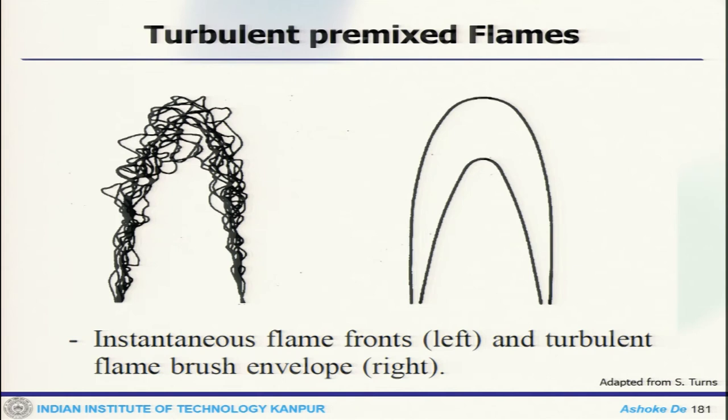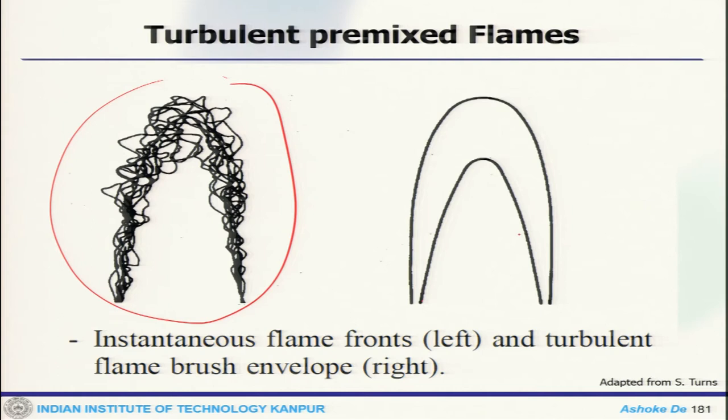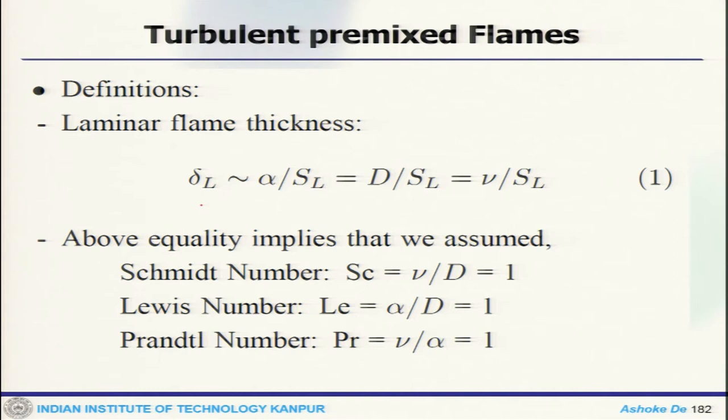If you look at the instantaneous images, this is the instantaneous flame front you can see. If you put that into a flame brush, there would be a lot of chaotic randomness in between. One definition is the flame thickness proportional to alpha by SL — one can write this in terms of diffusivity and the flame speed. Schmidt number equals 1, Lewis number equals 1, Prandtl number equals 1 — these are the relevant non-dimensional numbers.